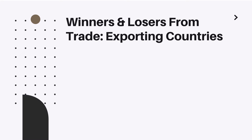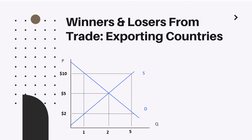Next, let's try to understand who are winners and who are losers from trade in each of these situations. Let's firstly consider the case of an exporting country. So here we have our market again in equilibrium. Let's say that the country discovers that the world price is actually higher than the local price and thus engages in export activities. As you can see, the total surplus will increase by the section which represents exports, section D in our case.